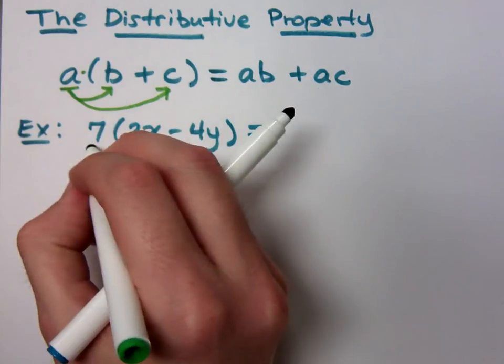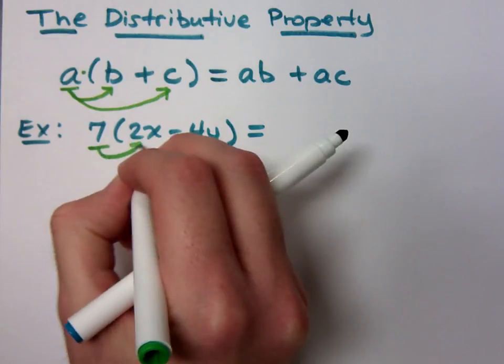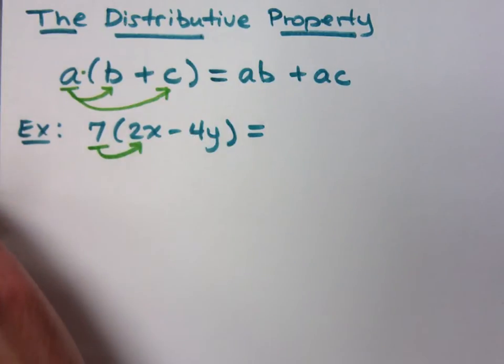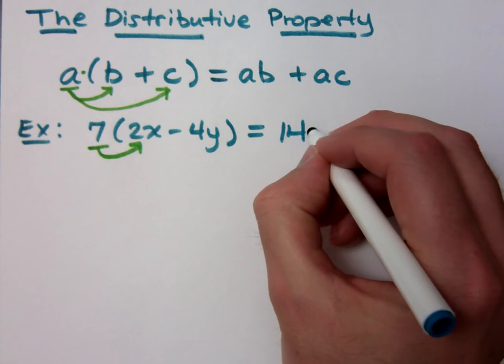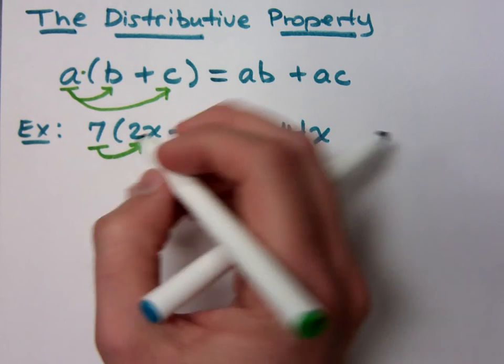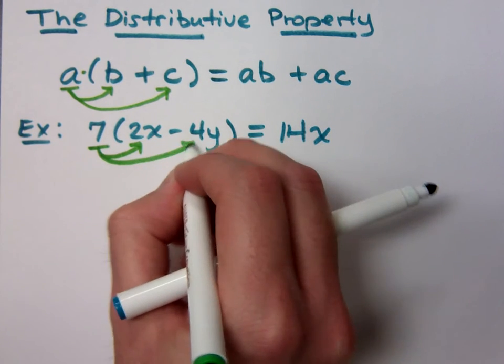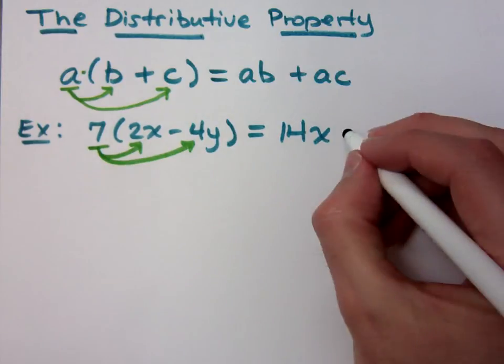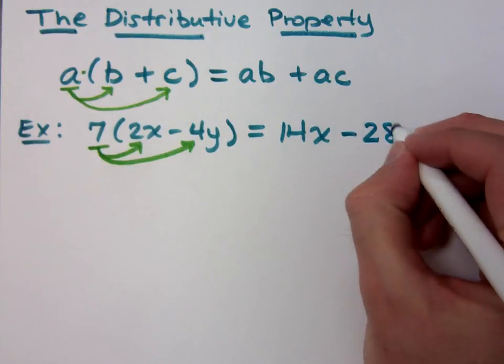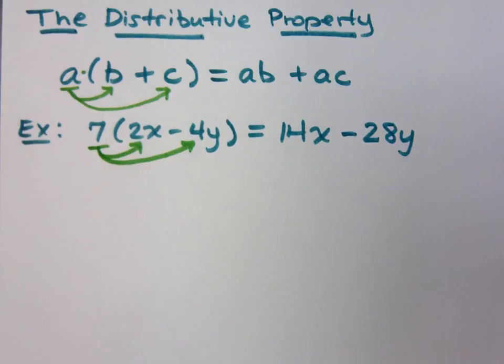You multiply 7 times. I get 7 times 2x, which is what? 14x. That's 14x. And then I take 7 times the other term, which is a minus 4y. What is that? It's a negative 28y.